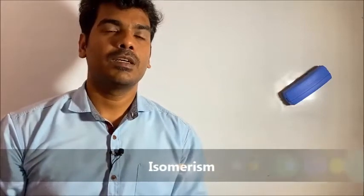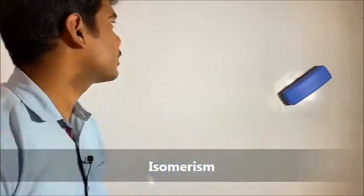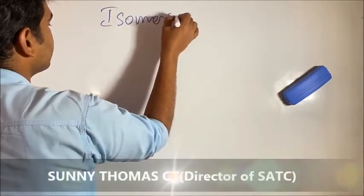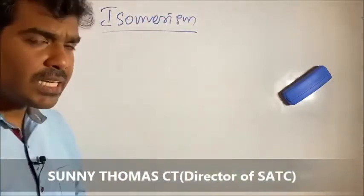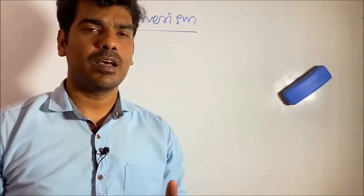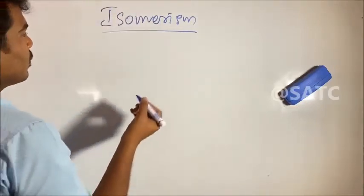Hello friends, welcome to Saranamundu. Isomerism is one part of Organic Chemistry, Chapter 6, Class 10. We are going to discuss the types of isomerism: chain isomerism, position isomerism, and functional group isomerism.